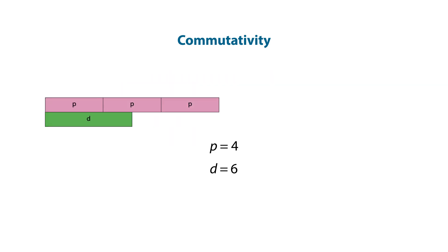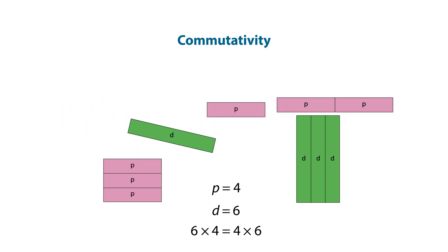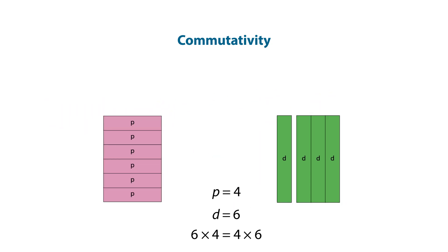Building trains shows that 6 pinks are equal to 4 dark greens. Use of the rods in this way helps to show that multiplication is commutative.